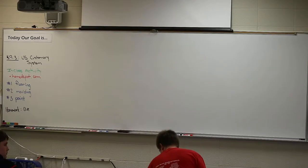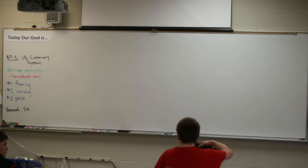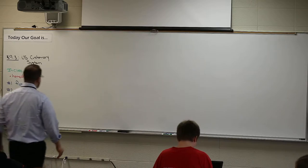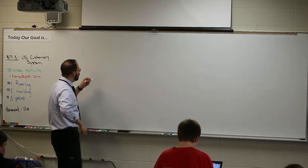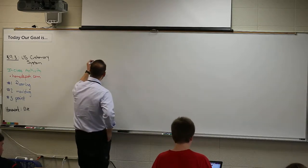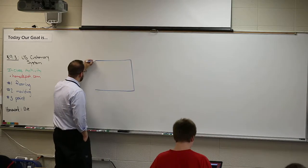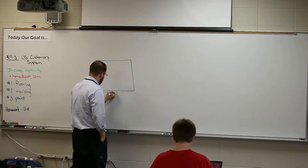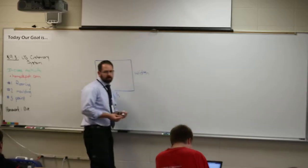Alright, so here — Chromebook. Okay, so yesterday what we talked about is flooring and molding. Now here's what I need: I need to know what were the numbers we figured out for this room — the dimensions. We had a length and we had a width. What were the numbers?